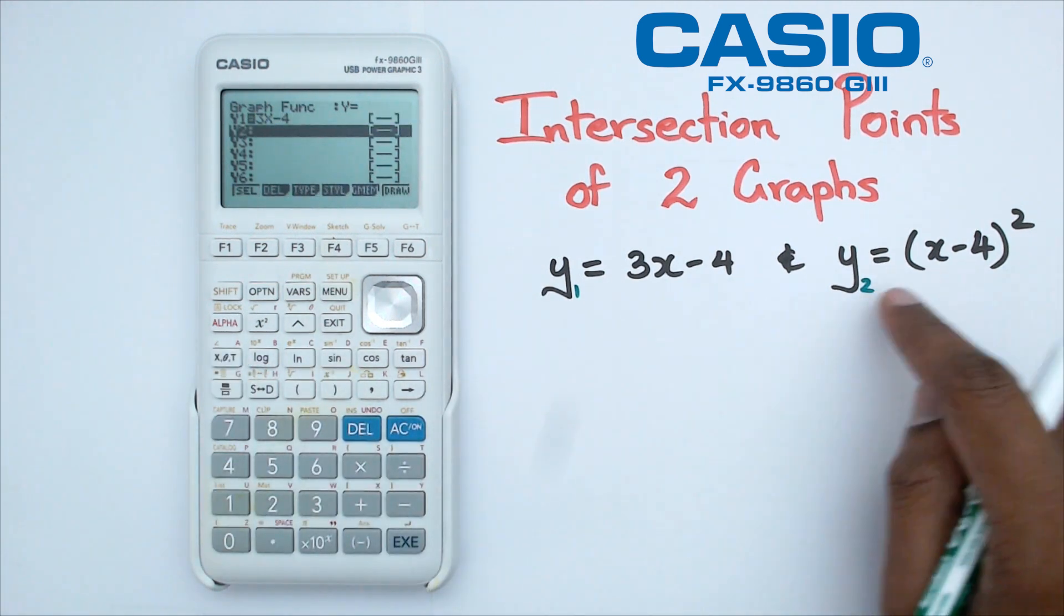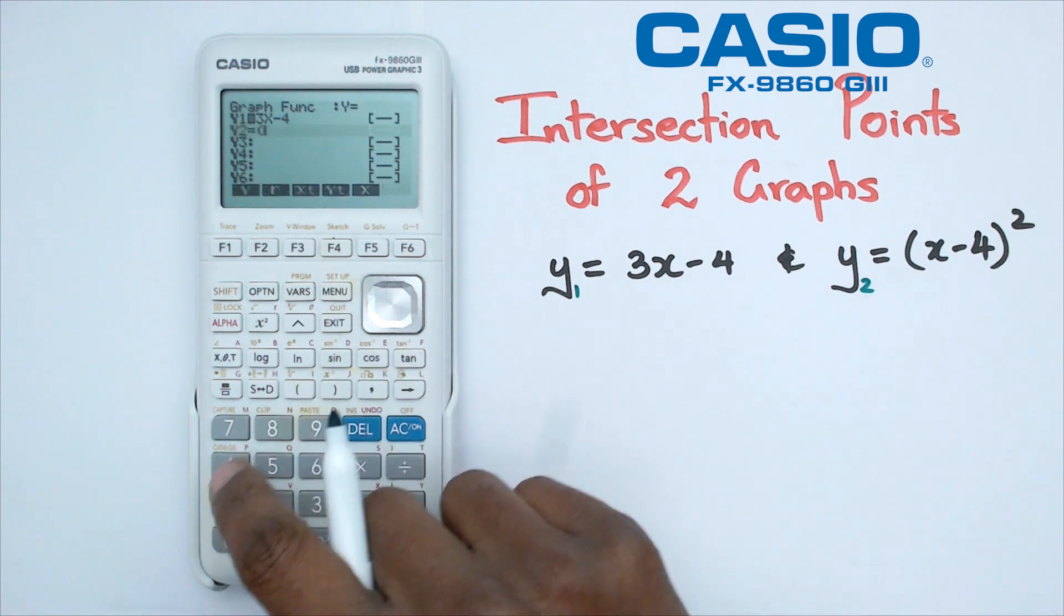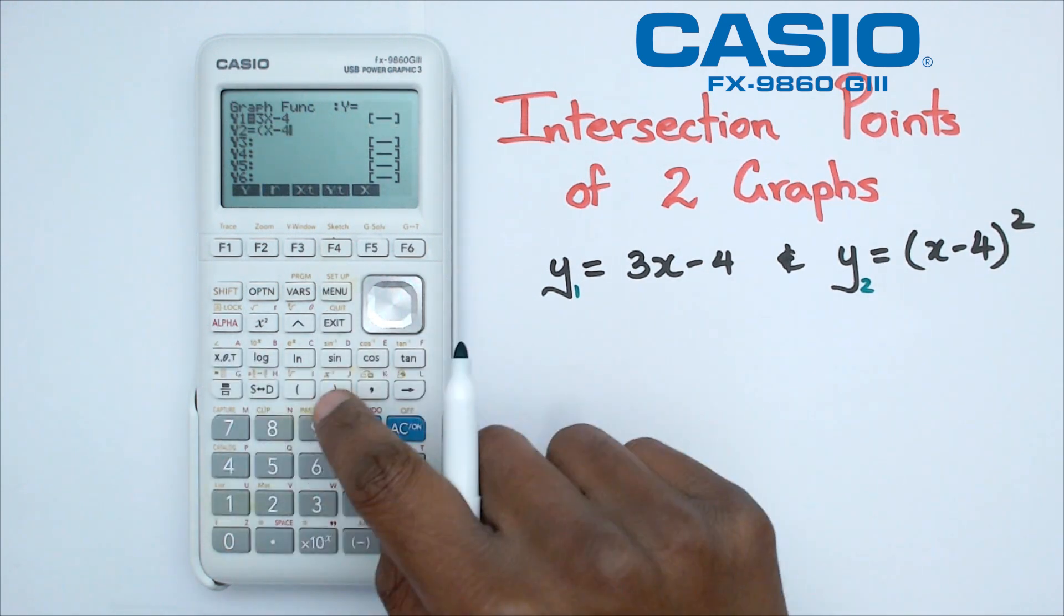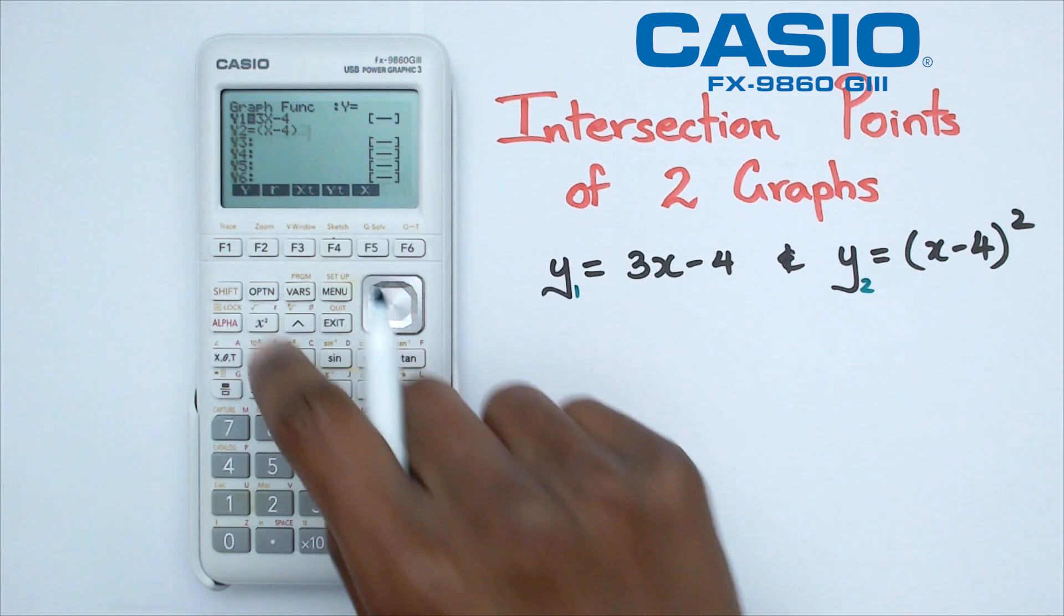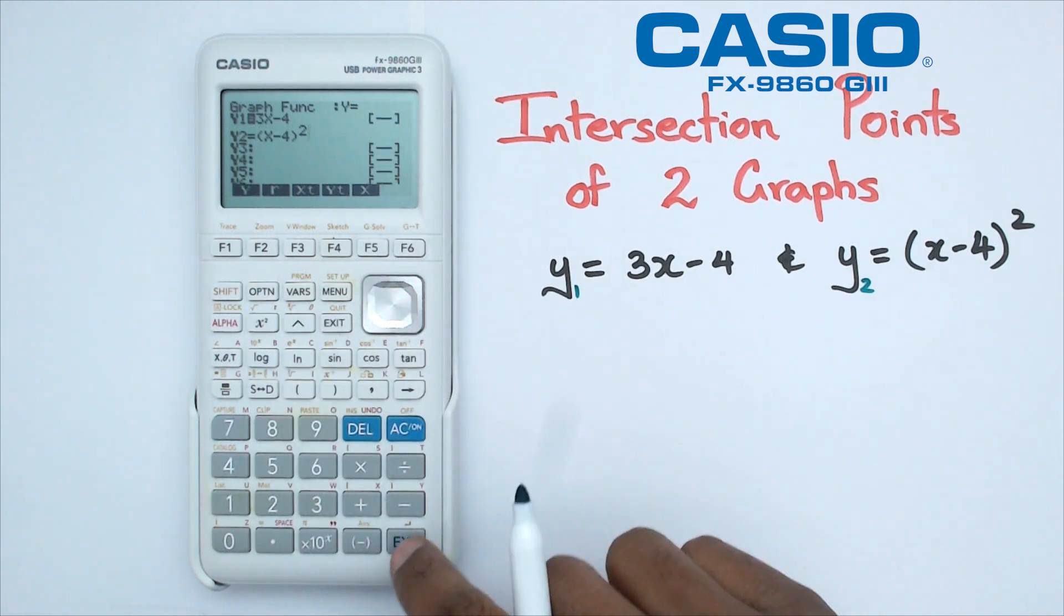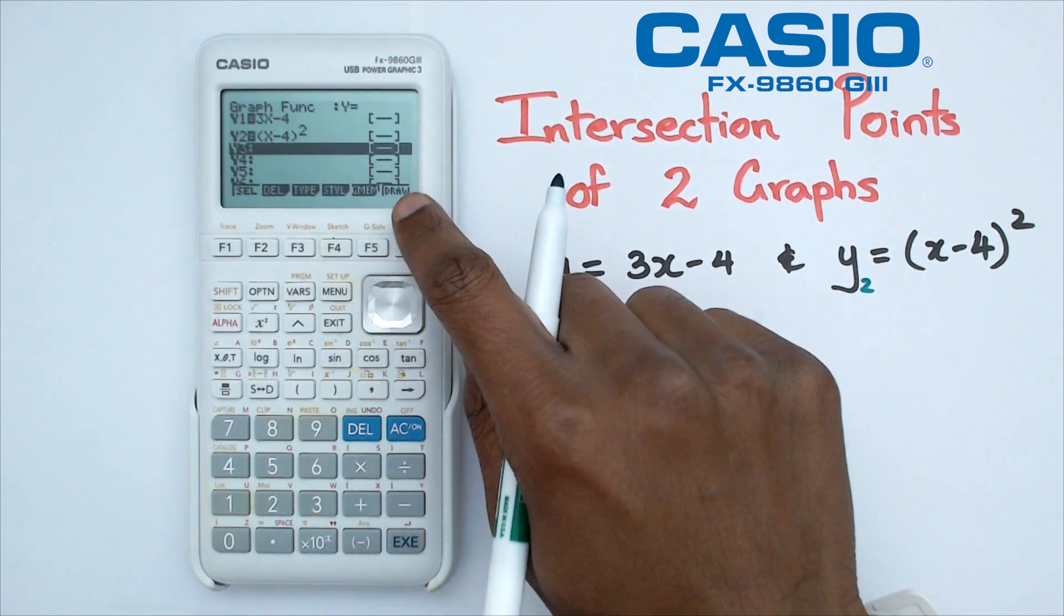And then we're going to type in the second graph, which is x minus 4 squared. So x minus 4, make sure that it's in brackets and squared. We're going to click on exe, and we're going to click on draw.